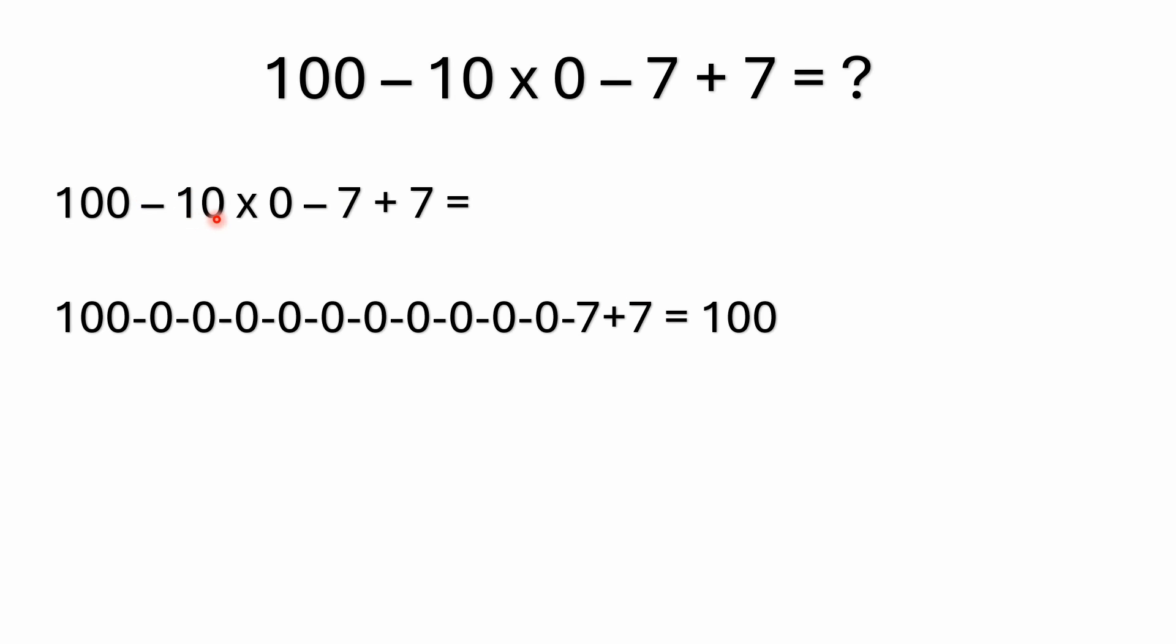So you could rewrite this problem 100 minus 10 times 0 minus 7 plus 7. It could be rewritten as 100 minus 0 minus 0 minus 0 and so on. You can subtract 10 zeros, you can subtract all the zeros you want, it takes nothing away from 100. And then minus 7 plus 7, that's still equal to 100.